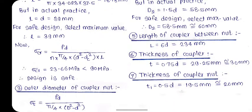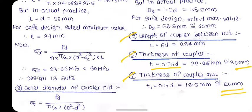The remaining dimensions of the turnbuckle are fixed using empirical relations. Length of the coupler: L = 6 × d = 234 mm. Thickness of the coupler: t = 0.75 × t = 29.25 mm, approximately 30 mm. Thickness of the coupler nut: t1 = 0.5 × d = 20 mm. This completes the design example of the turnbuckle.